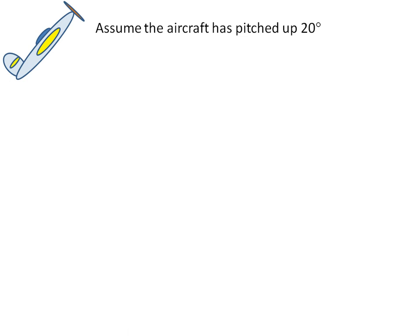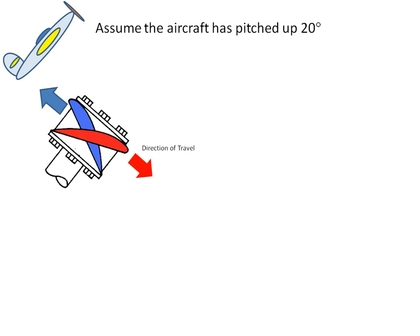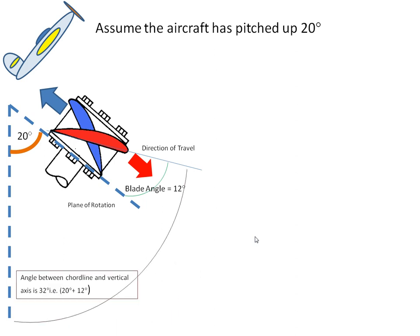Now let's assume the aircraft is pitched up 20 degrees. The propeller hub would now be in that plane and our plane of rotation has moved from the vertical position to this position 20 degrees offset. The blade angle is still 12 degrees, and the angle between the chord line and the vertical axis is 12 plus 20, which is 32 degrees.